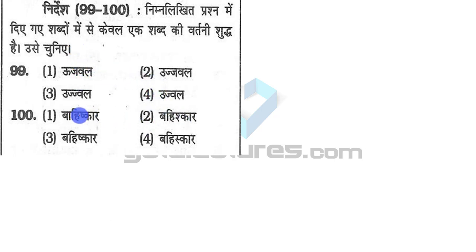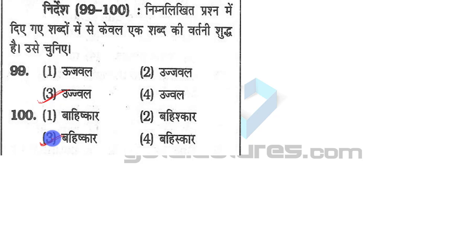This is also error correction — they are asking you to identify the correctly spelled word. 'Ujwal' means which can bring light, and this is the correct spelling. 'Bahishkar' means to get rid of or eradicate something, and this is its correct spelling. So this was all about section A. We have covered the complete section A for DSSSB PGT. If you want us to cover more model papers or record something else, leave it in the comments. We will try to cover it as soon as possible, including this paper in Hindi language. Thank you for watching.